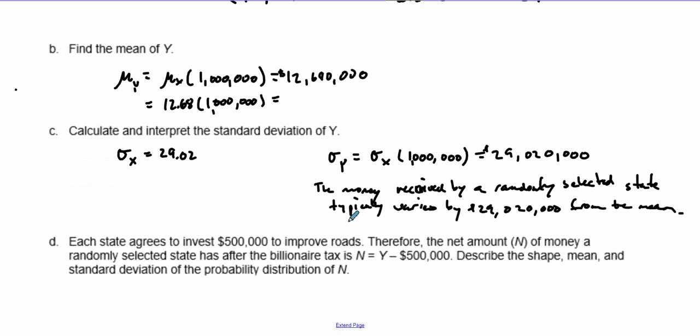Each state agrees to invest $500,000 to improve roads. Therefore, the net amount N of money from the billionaire tax is N = Y - 500,000. Describe the shape, mean, and standard deviation. Since we're just subtracting $500,000 from Y, the shapes of N and Y are the same.